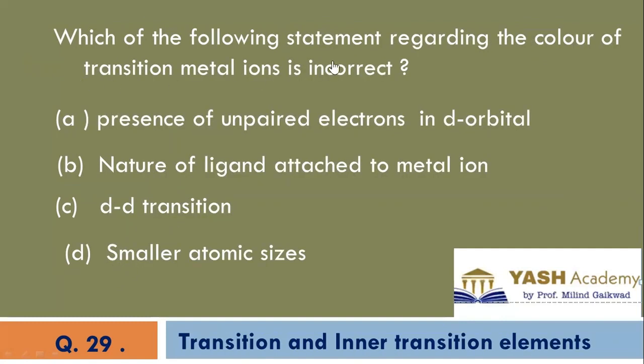Which of the following statements regarding the color of transition metal ions is incorrect? D is the correct option.